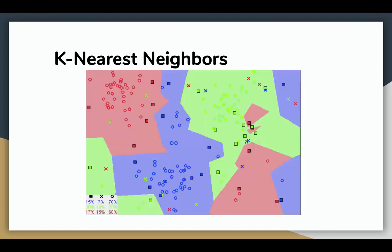Notice in the image that most of the time similar data points are close to each other. The KNN algorithm hinges on this assumption being true enough for the algorithm to be useful.